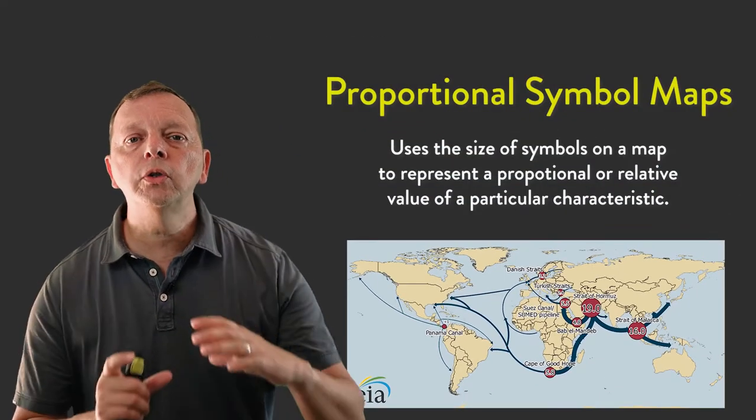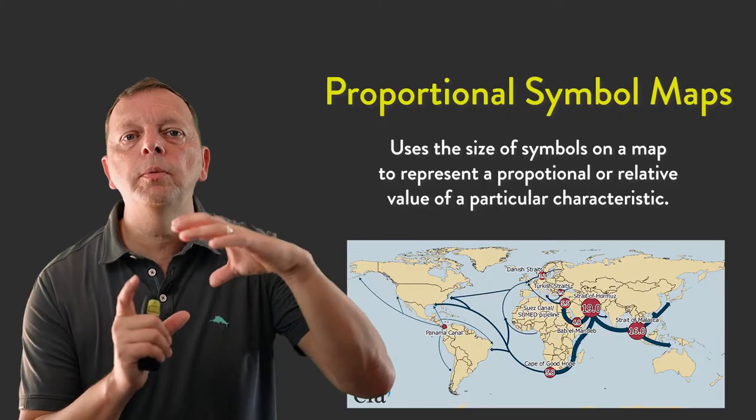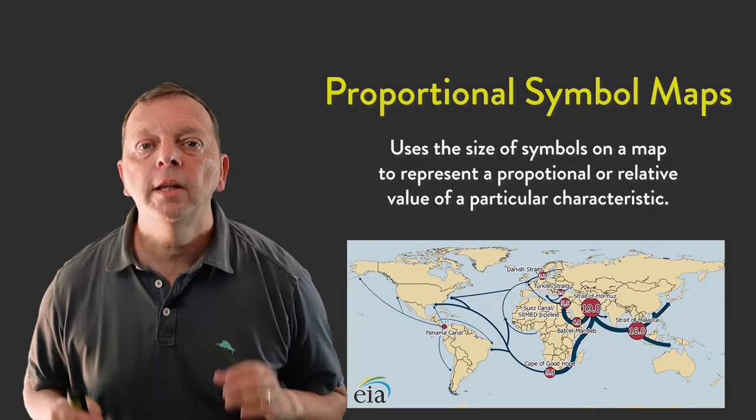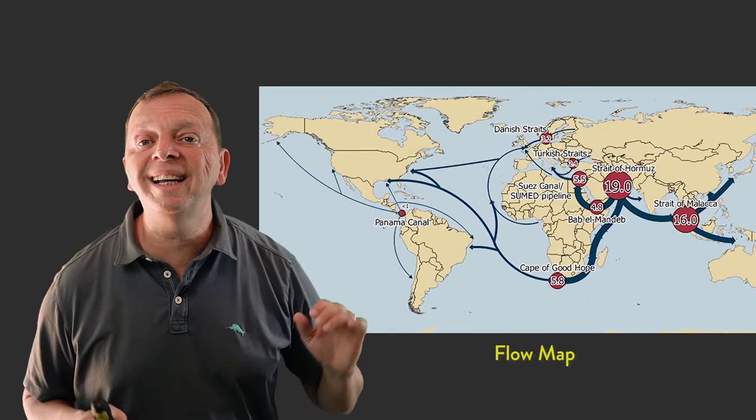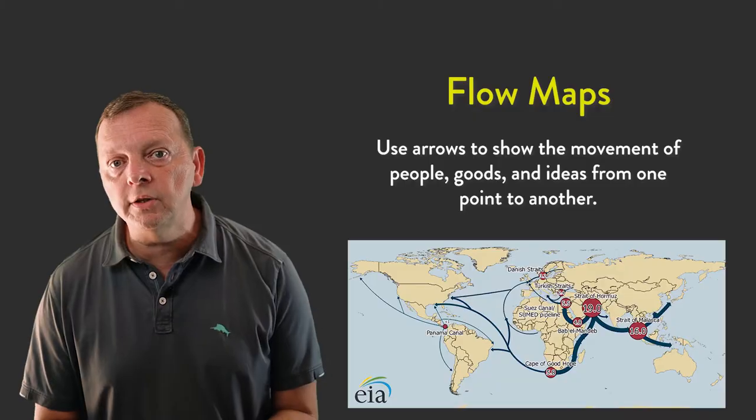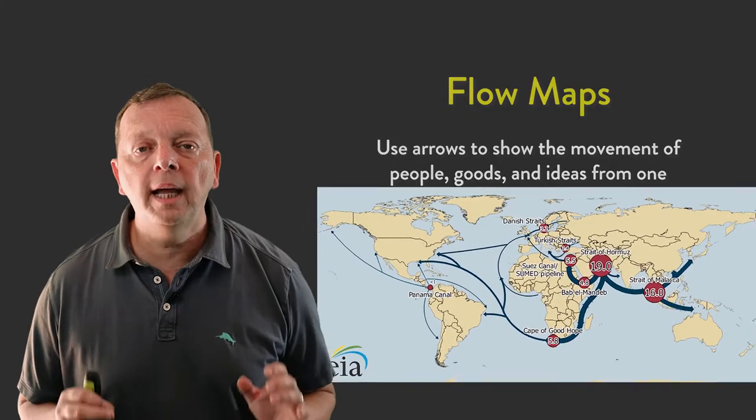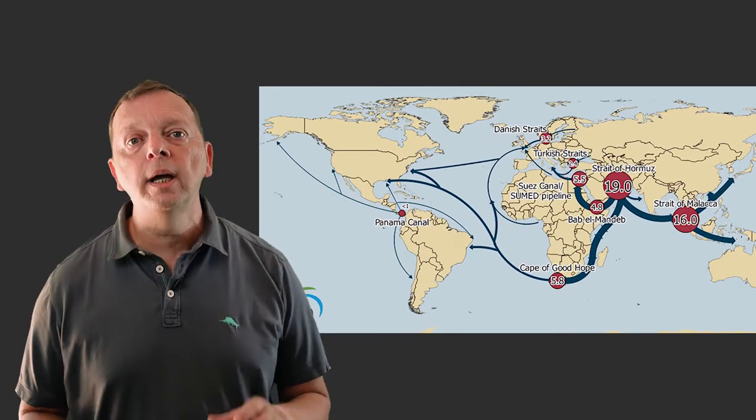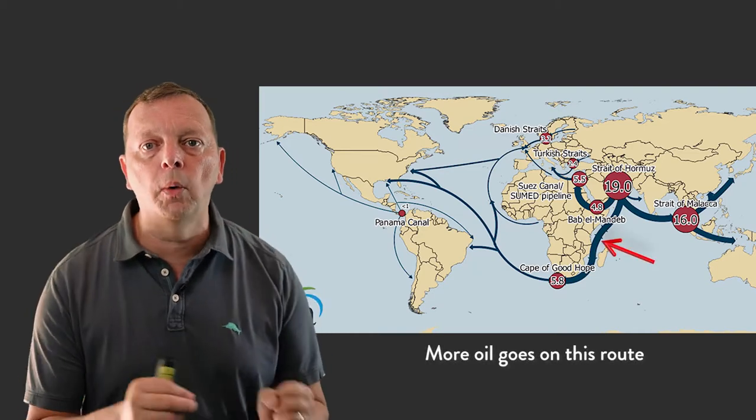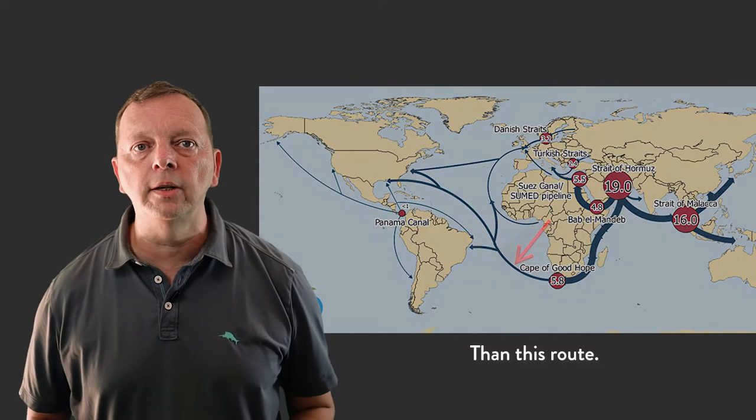Proportional symbol maps will use the size of the symbols to be relative to the value of the characteristic they're trying to show. Now, this map is also combined with what is known as a flow map, which shows the movement of people, goods, and ideas through the use of arrows. But even the arrows in the flow map portion use proportional symbols to show the amount of oil that goes from one point to another by the thickness of these arrows' lines.